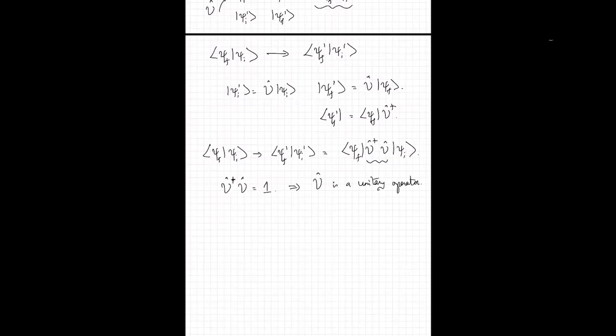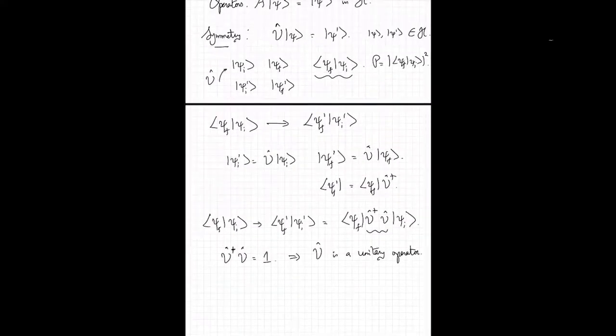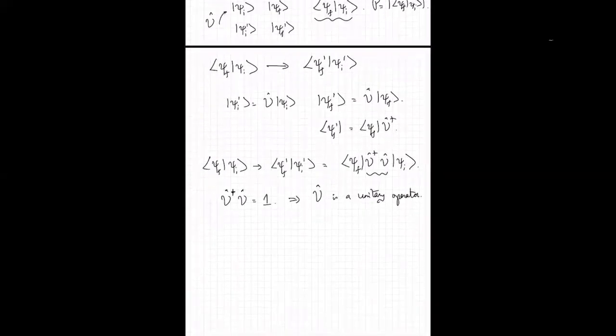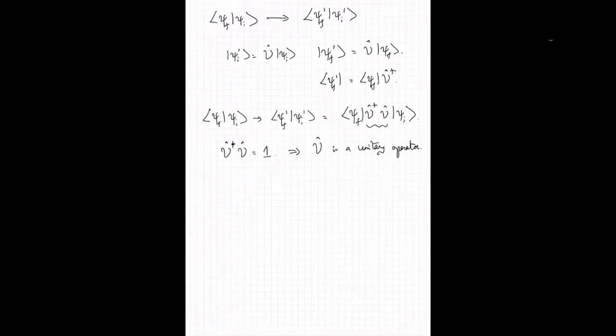If you are careful, you might notice that we don't really measure probability amplitudes — we measure probability. So U†U could also be −1; the probability amplitude changes by a sign but the overall probability does not. Hence U†U = −1 is also a valid symmetry operation, corresponding to what is called an anti-unitary operator. But most symmetry operators in quantum mechanics are unitary, and that is what we will concentrate on.